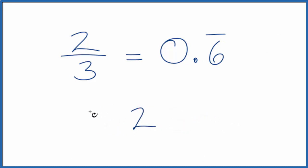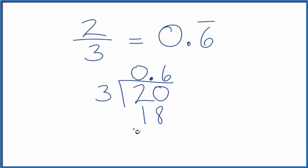So we have 2, and we want to see how many times 3 goes into 2. Right now, 3 doesn't fit into 2, so let's put 0 and a decimal point. Now we can call this 20. 3 times 6, that's 18. 20 minus 18, that gives us 2.